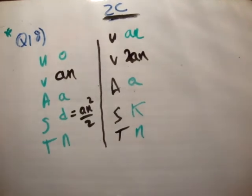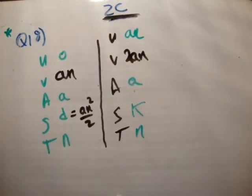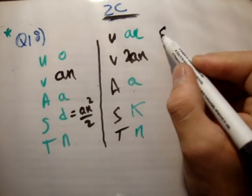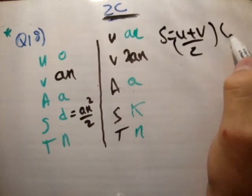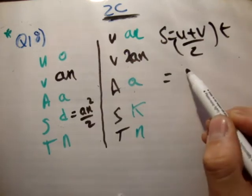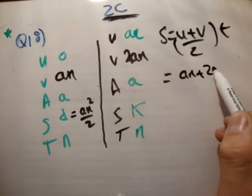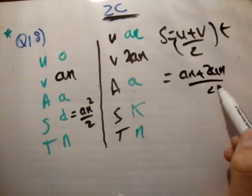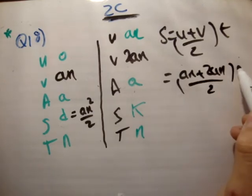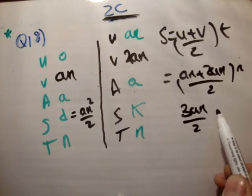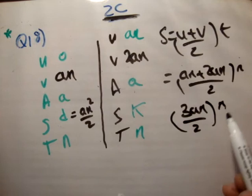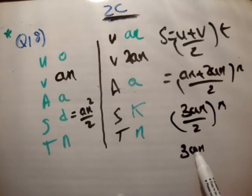Next of all, we'll go for the distance. s is equal to u plus v over 2 times t. Like that. Is equal to an plus 2an over 2 times n, 3an squared over 2.